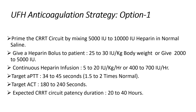Let's discuss option one: a generic anticoagulation strategy using unfractionated heparin. First, prime the CRRT circuit by mixing 5,000 to 10,000 international units of heparin in normal saline, then give a heparin bolus of 25 to 30 IU/kg body weight, or 2,000 to 5,000 IU as a bolus. Next, administer a continuous heparin infusion at 5 to 20 IU/kg/hour or 400 to 700 IU/hour.